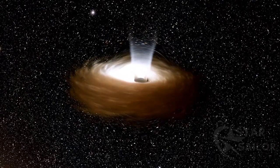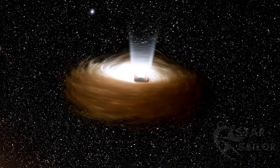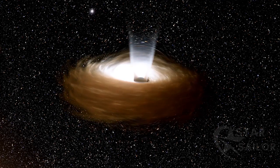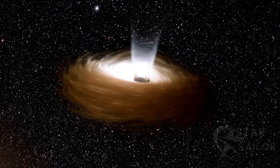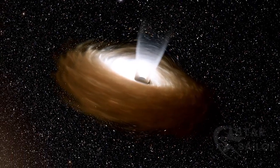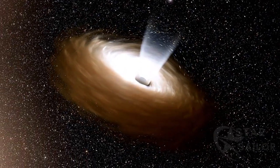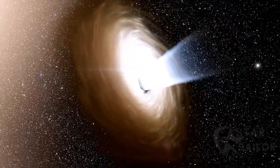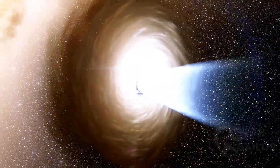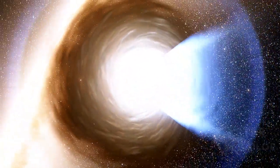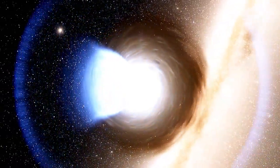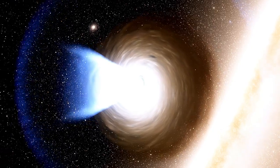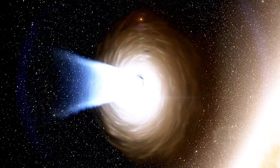This quasar is fueled by a black hole with a mass 20 billion times that of the Sun. As matter falls into the black hole, it heats up and emits tremendous amounts of energy, making the quasar incredibly bright. The light we see from APM left it 12 billion years ago, meaning we are observing it as it was when the Universe was only about 1.6 billion years old. This ancient light provides valuable insights into the early Universe.